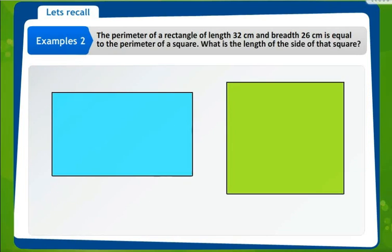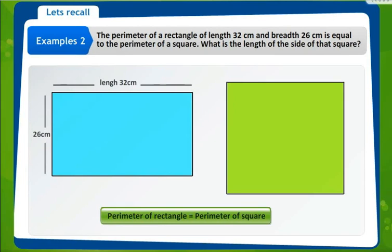In this sum you will notice that the perimeter was given and you had to find the breadth. Next example: the perimeter of a rectangle of length 32 centimeters and breadth 26 centimeters is equal to the perimeter of a square. What is the length of the side of that square?